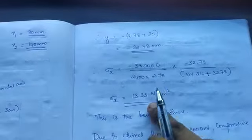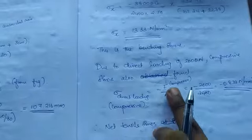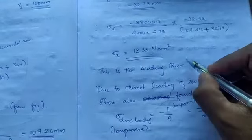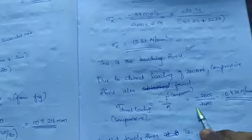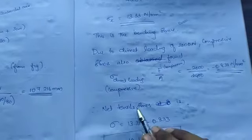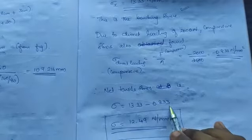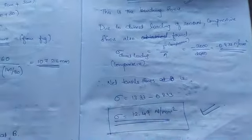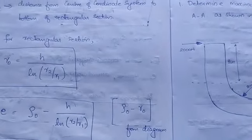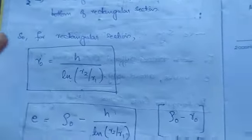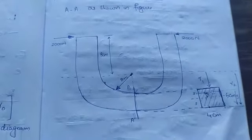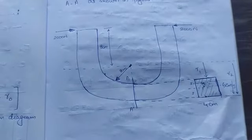With y found, substitute into the bending stress equation to get σ_x. For the total stress, also account for the direct loading: −F/A gives approximately −0.833 N/mm². The net tensile stress is 13.33 − 0.833, giving the total tensile stress at section B. The key takeaway is to remember the Winkler-Bach formula and that for rectangular sections r₀ = h / ln(r₂/r₁). The same pattern applies to all such problems. Thank you for listening.